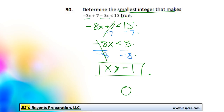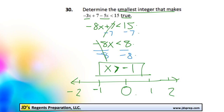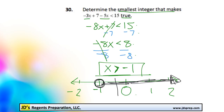If it helps, you can try to visualize it on a number line. You've got negative 2, negative 1, 0, 1, 2. If we were to graph this inequality, we would draw an open circle at negative 1 and move to the right. So you can see visually that the first integer value that satisfies this inequality is a value of 0.